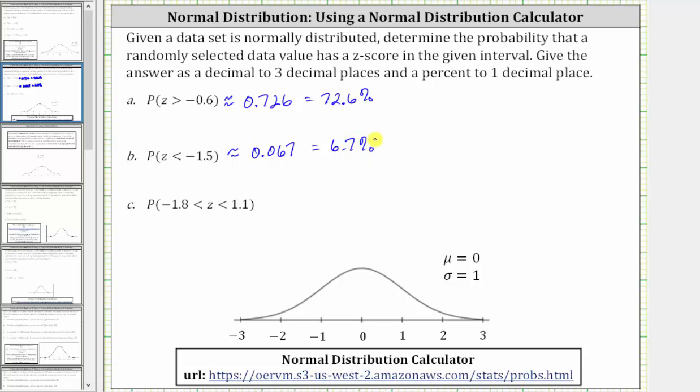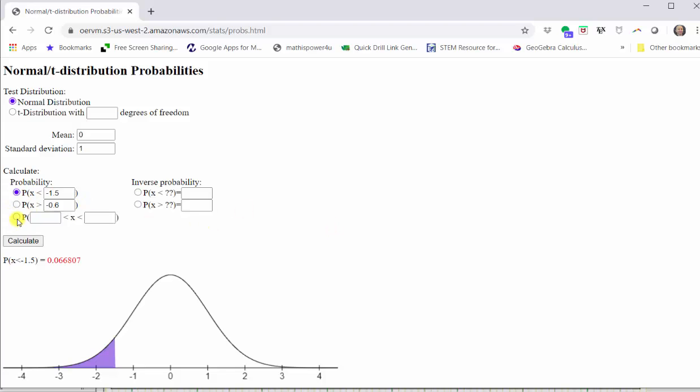And for the third example, we have the probability the z-score is greater than negative 1.8 and less than 1.1. Going back to the calculator one last time, we now select the third option. Enter the leftmost z-score, which is negative 1.8 tab. Enter the rightmost z-score of 1.1. Click Calculate.